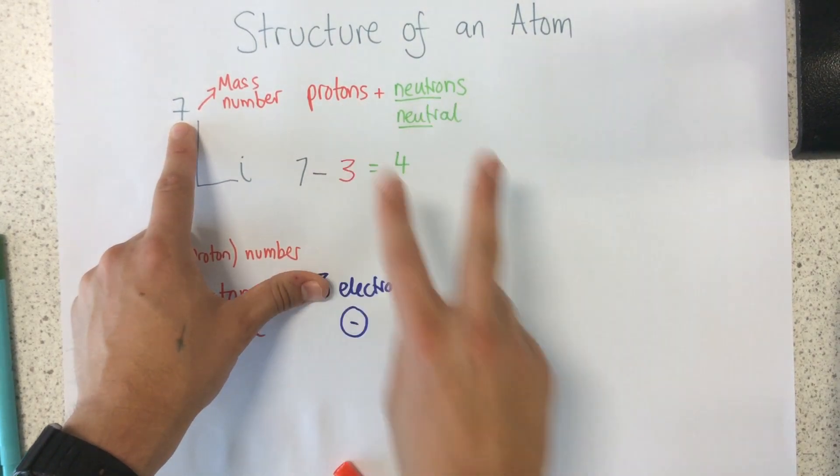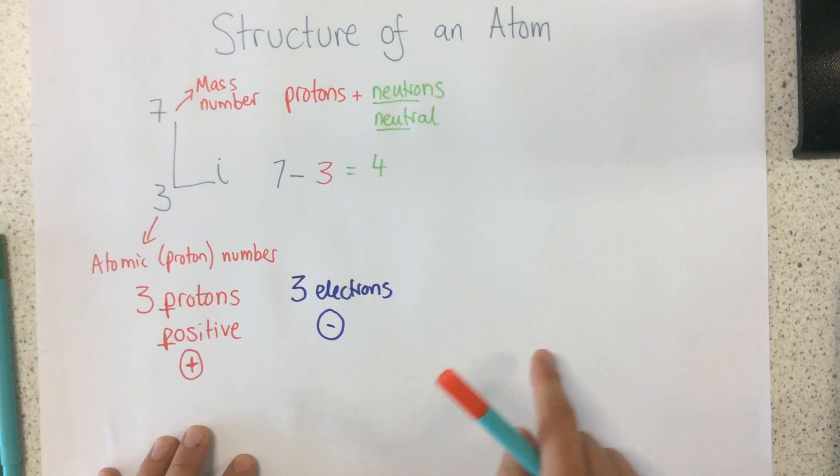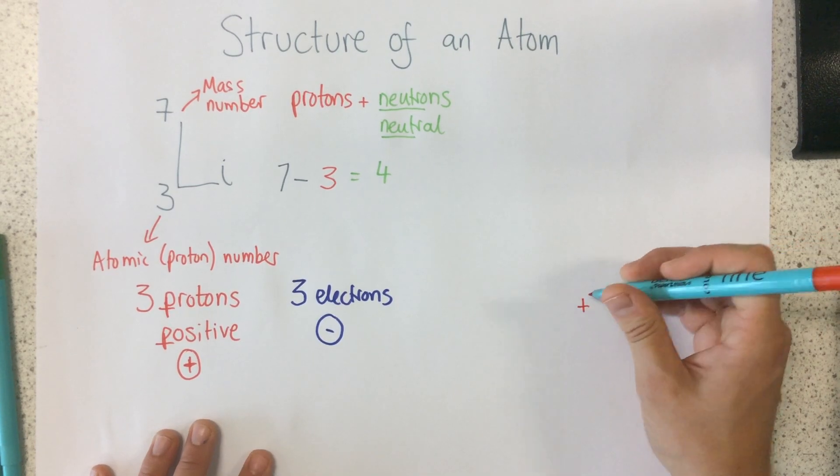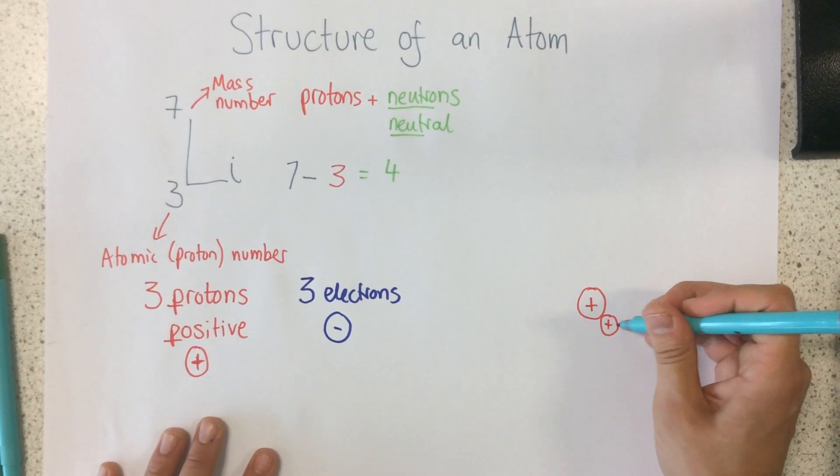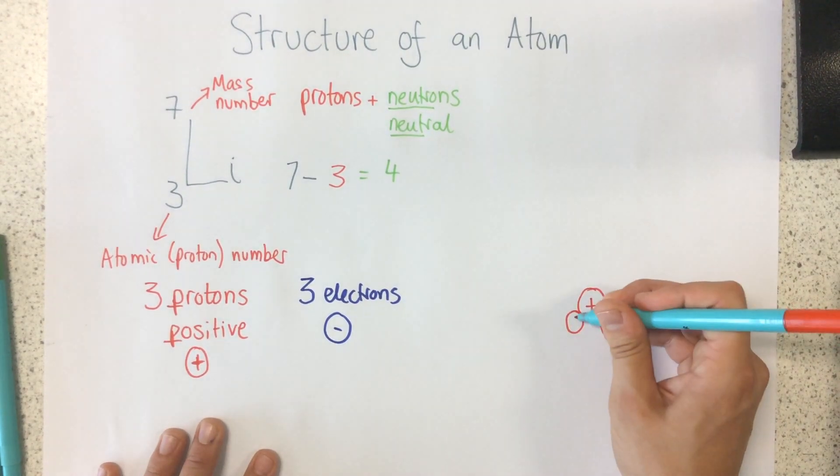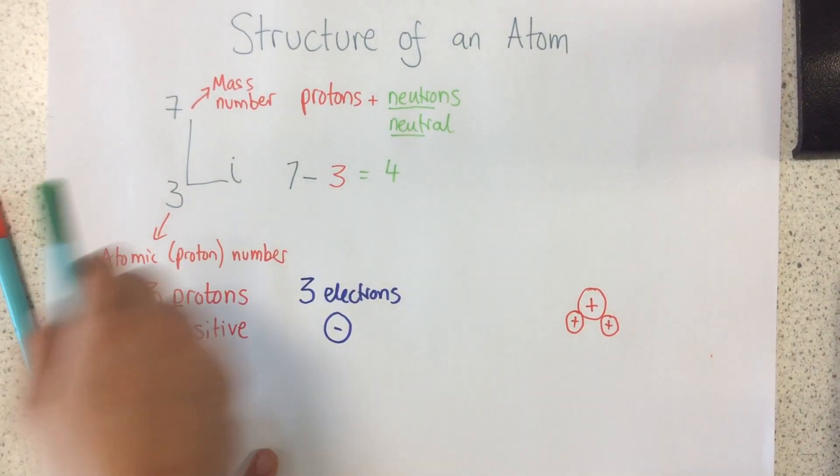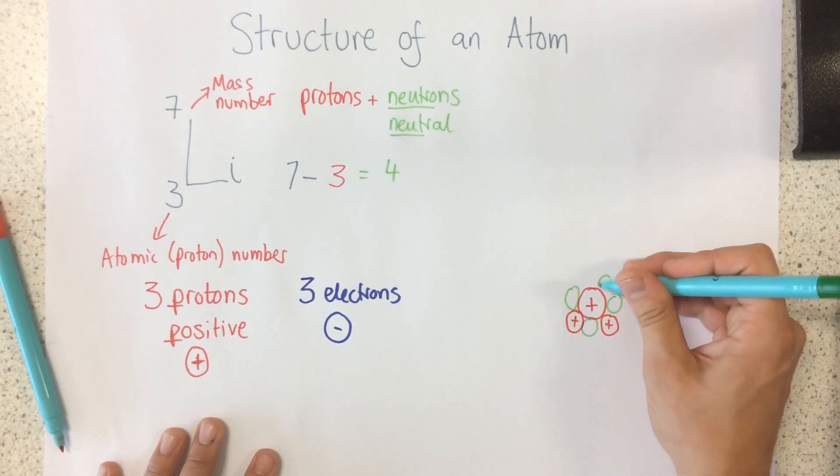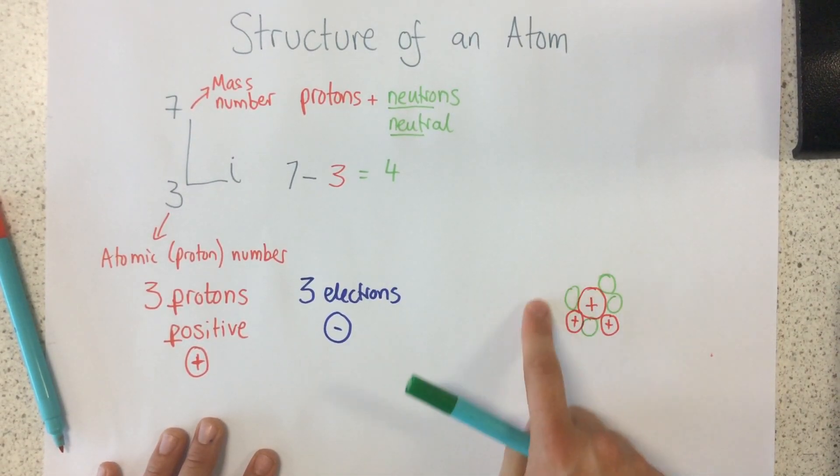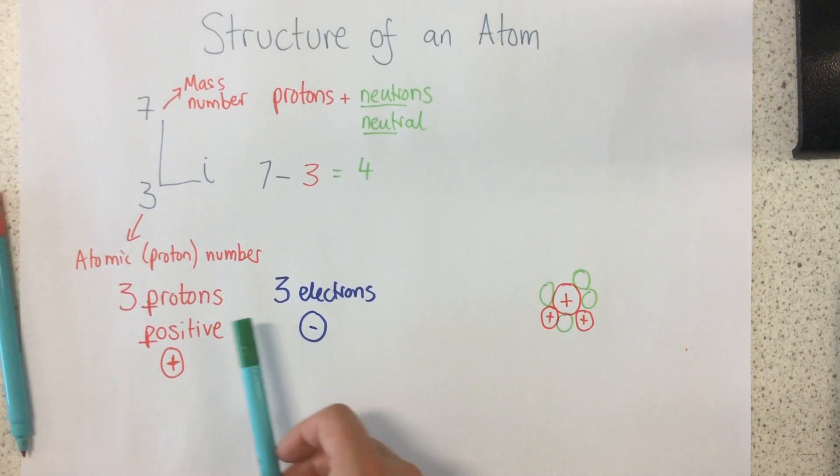Now, this mass number, this number here, tells us the number of particles in the nucleus. Protons and neutrons we find in the nucleus. So, I know I've got 3 protons. 1, 2, 3. And I know that I have 4 neutrons. 1, 2, 3, 4. So in the nucleus, the centre part of the atom, that's where I find these particles.